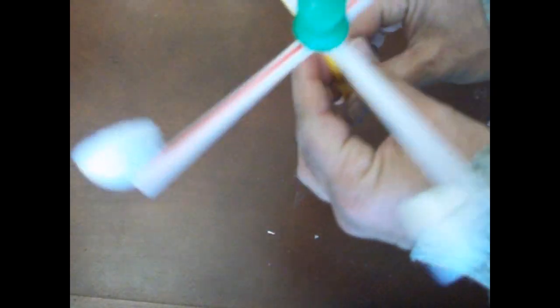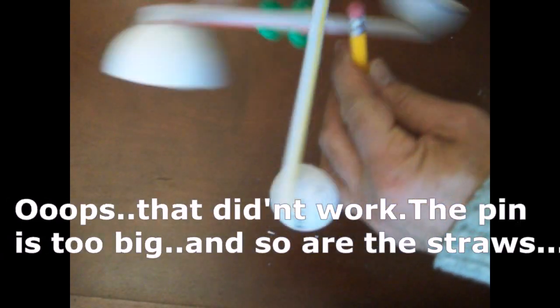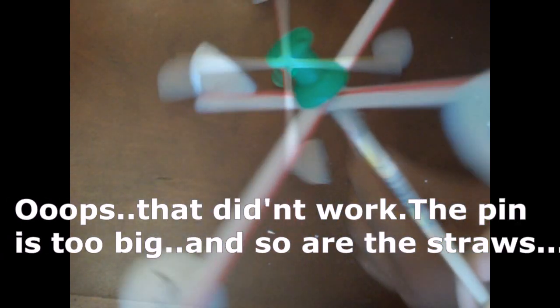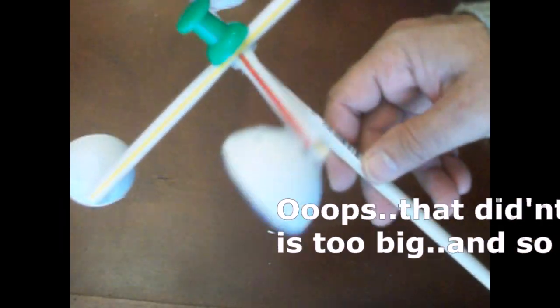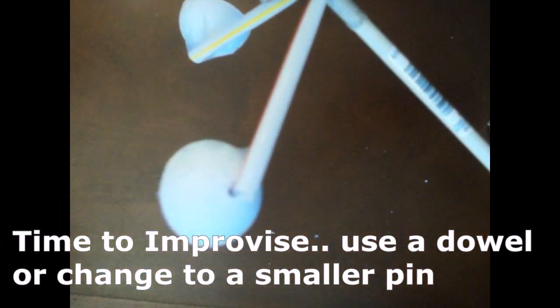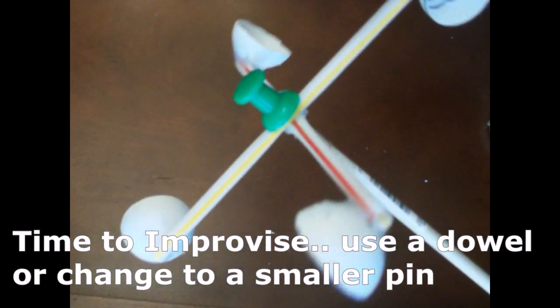This would be our test. What I did was instead of a pencil, I just took a dowel. You could actually stick it into the pencil too. You don't need the eraser because this is a bigger pen, but if you have a smaller pushpin, then you would use the eraser.